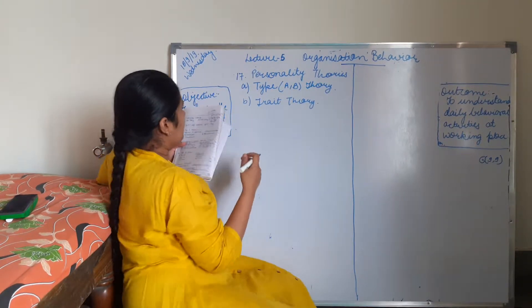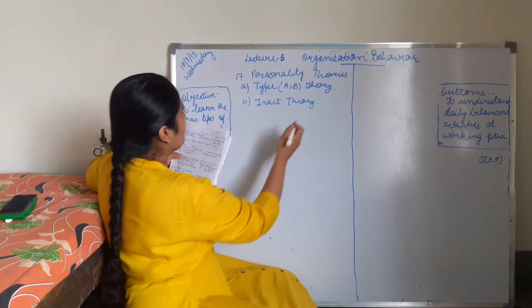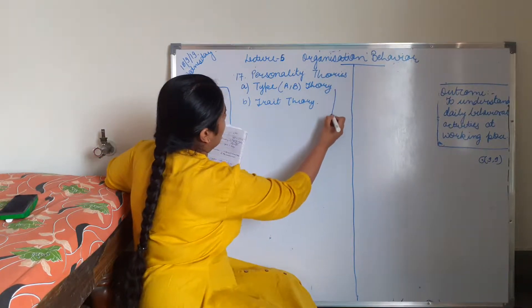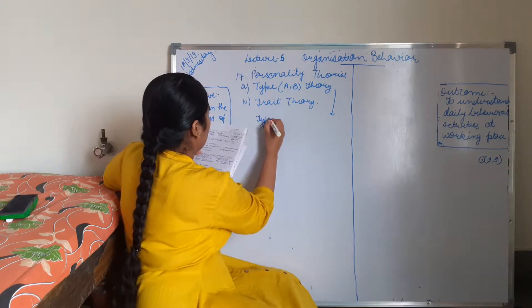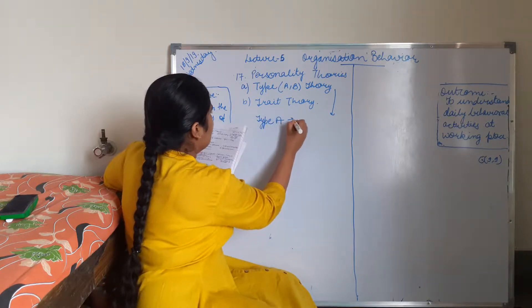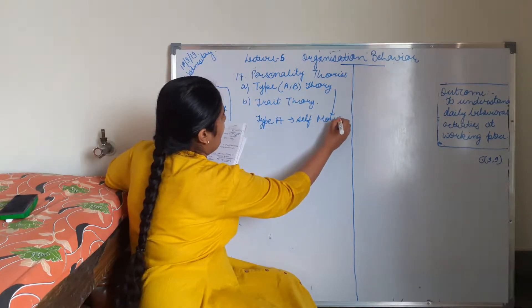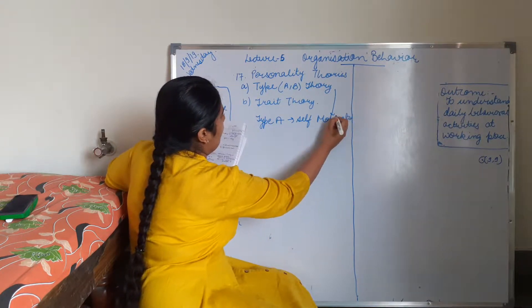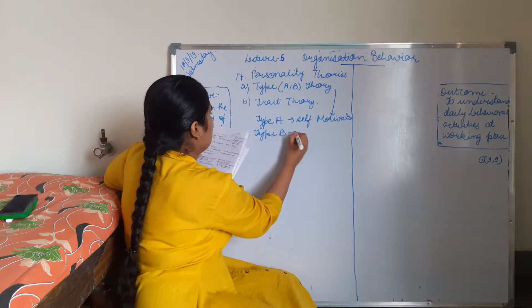In Type A, A is Self-Motivated, and Type B is Lazy.